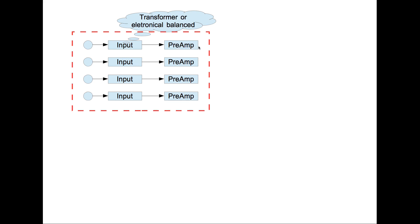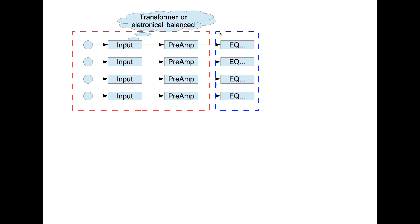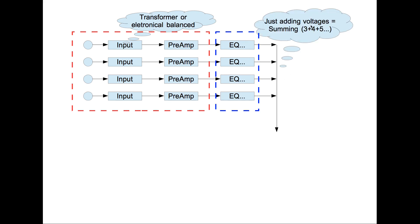From this input stage your signal goes to the next units like equalizers, compressors, panning, volume faders — this is the channel processing, what you do to the sound yourself by turning knobs. These signals then go on one line and are added together — it's adding voltage in an analog mixer, or just summing like three plus four plus five minus six in software.